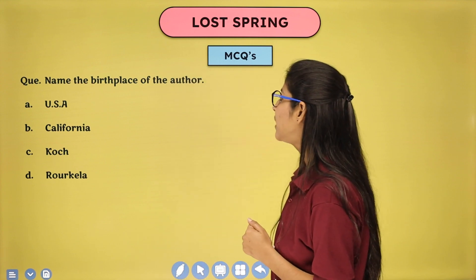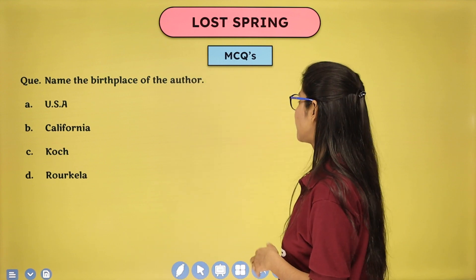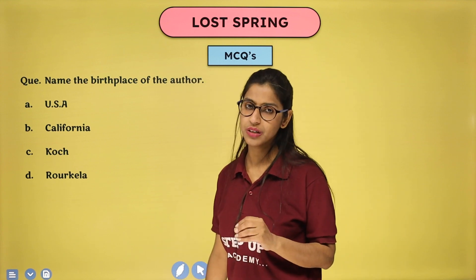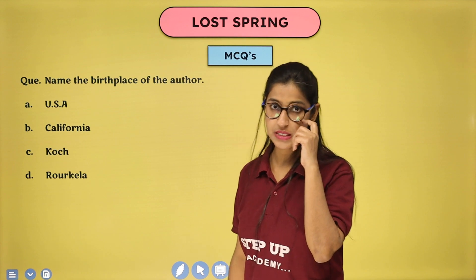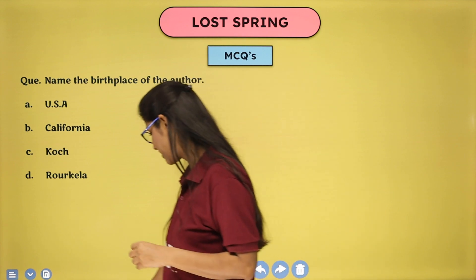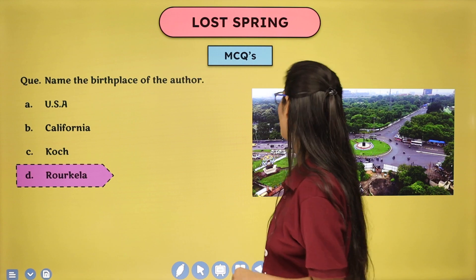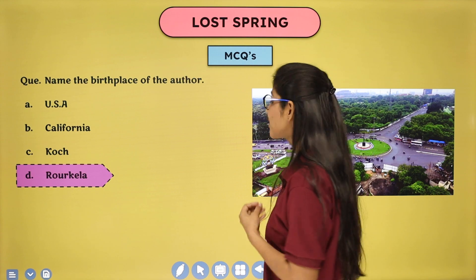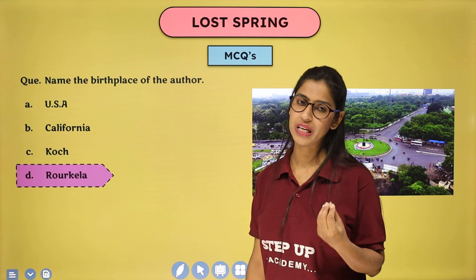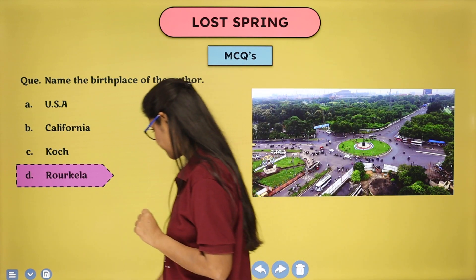Name the birthplace of the author, Anees Jung. Let's immediately check the answer — that is Rourkela. That is where she belongs, and that is her birthplace.